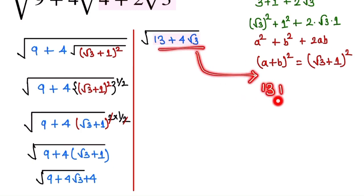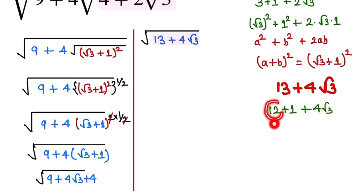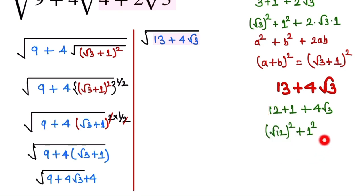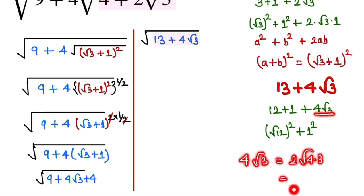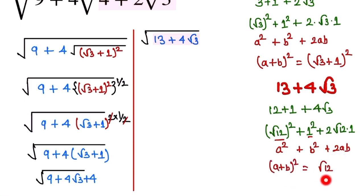We can split 13 as 12 + 1 plus 4√3. We write 12 as (√12)² and 1 as 1². Then 4√3 = 2·√12·1, so the expression 13 + 4√3 = (√12)² + 2·√12·1 + 1² = (√12 + 1)². This matches the identity (a + b)² with a = √12 and b = 1.